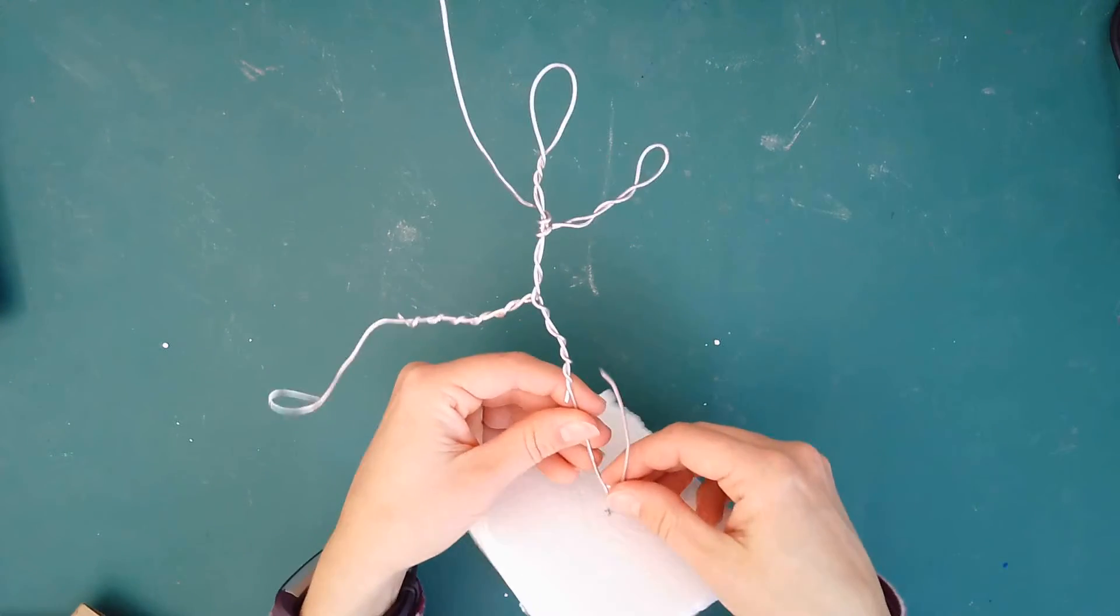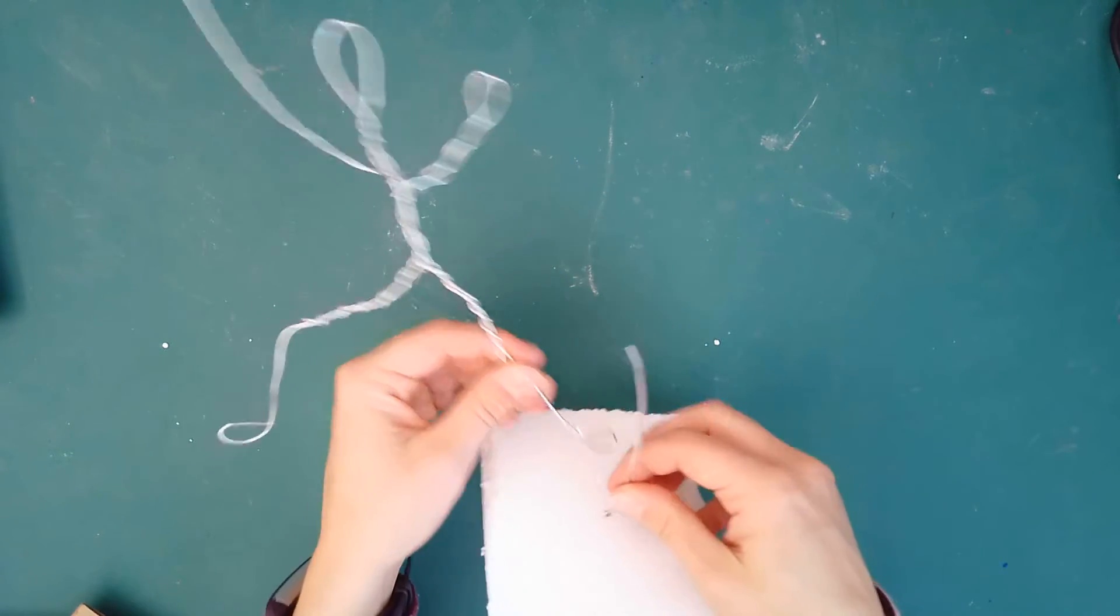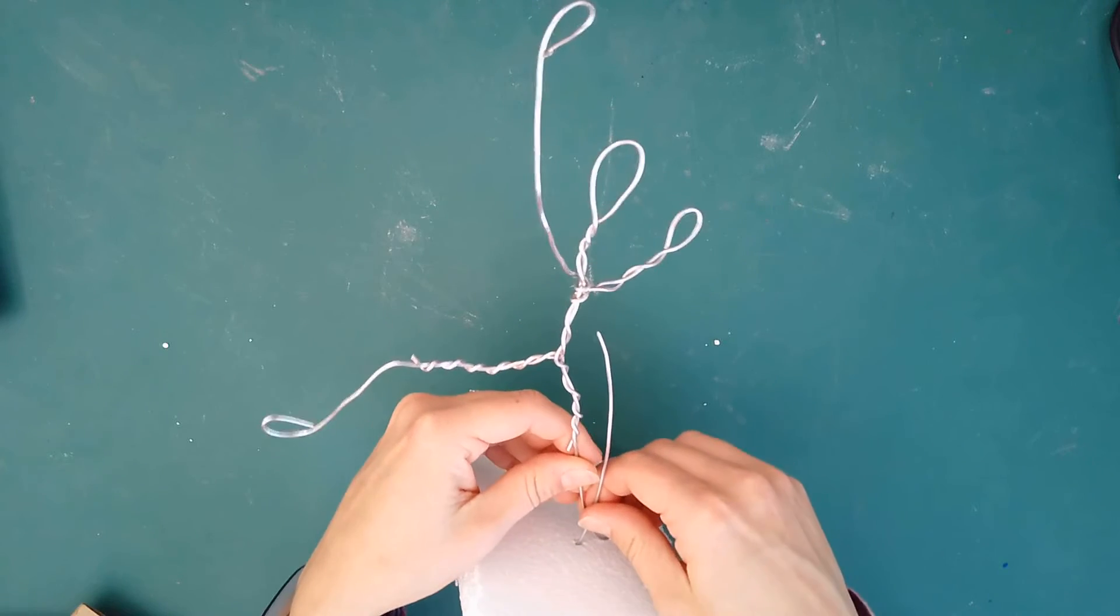So my suggestion is to use the twisty tie technique. I'm going to place this wire around it and just twist. And if you need to add more wire to it, you can.